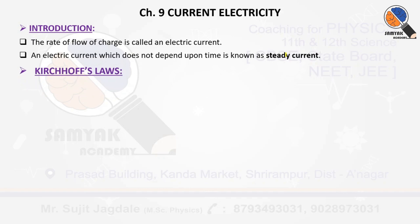The base of current electricity is Kirchhoff's law. Similarly, for electrostatics the base is Gauss's law, and for magnetic effect of electric current the base law is Ampere's law, and the second law is the Biot-Savart law. So in every lesson there is a base law, and for current electricity, Kirchhoff's law is considered as the base law.